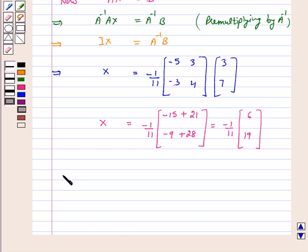This implies x, y is equal to minus 6 by 11 and minus 19 by 11.